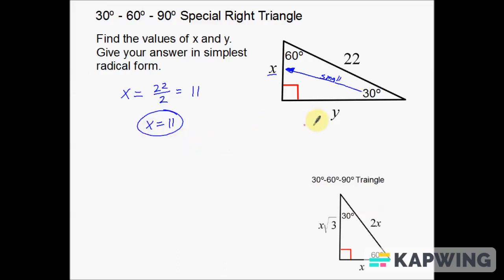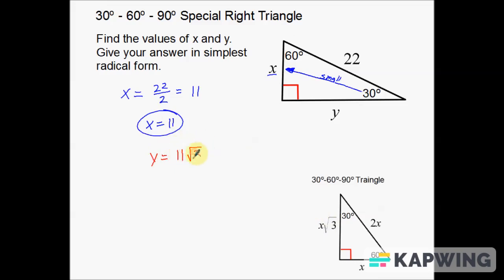Now we're going to find y. Y is across from the 60 degree angle, which means it's my longer leg — the biggest leg of the triangle. 22 is still the largest side overall since it's the hypotenuse. So y is the larger leg and x is the smaller leg. To get from the small leg to the long leg, all we have to do is multiply by the square root of 3. So y is going to be easy to find — just take 11 and multiply by the square root of 3.